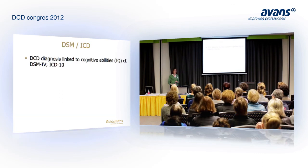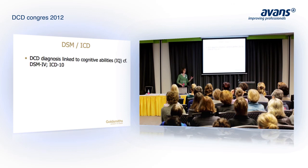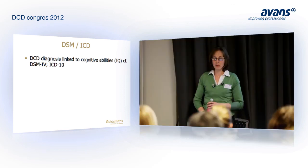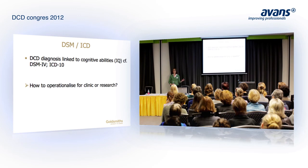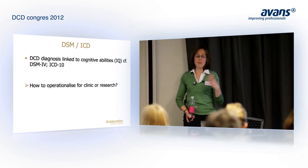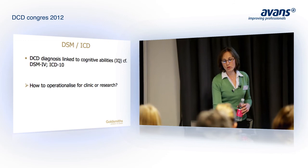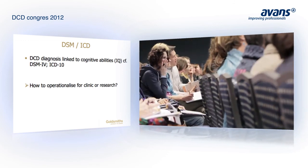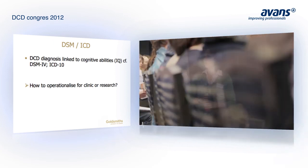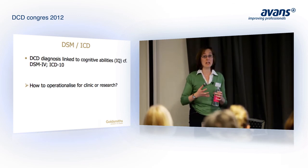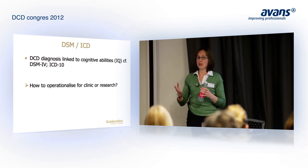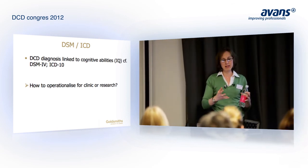As you'll all be very aware, DCD diagnosis is linked in both DSM and ICD to cognitive abilities — specifically IQ. But how do we operationalize that aspect of the criteria for clinical work, diagnosis, intervention, and research purposes? Apparently DCD children and adults should have motor development out of keeping with other aspects of their development. Generally we preclude children with an IQ below 70 or 80 from having a diagnosis of DCD, but there isn't any data in the literature to show whether that's the right cut-off or whether we should be making that exclusion.